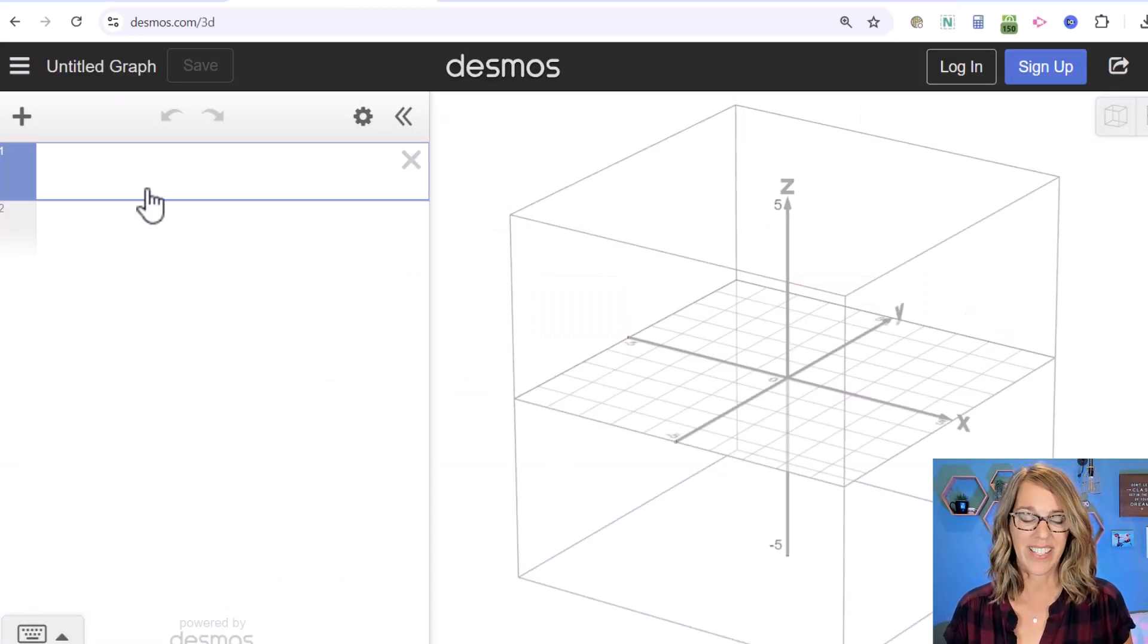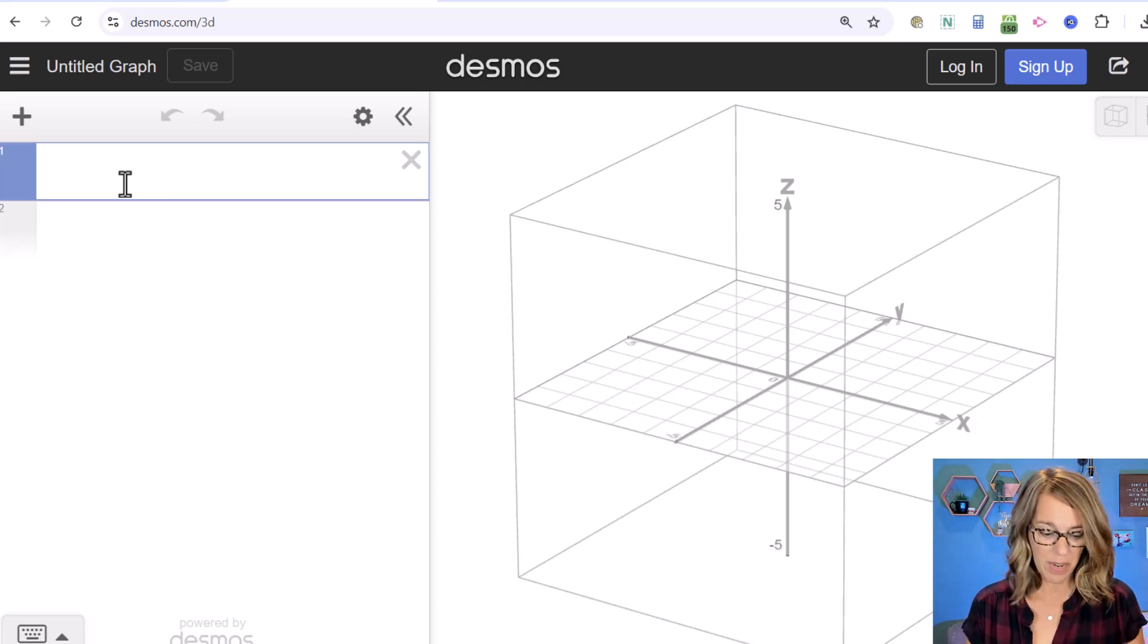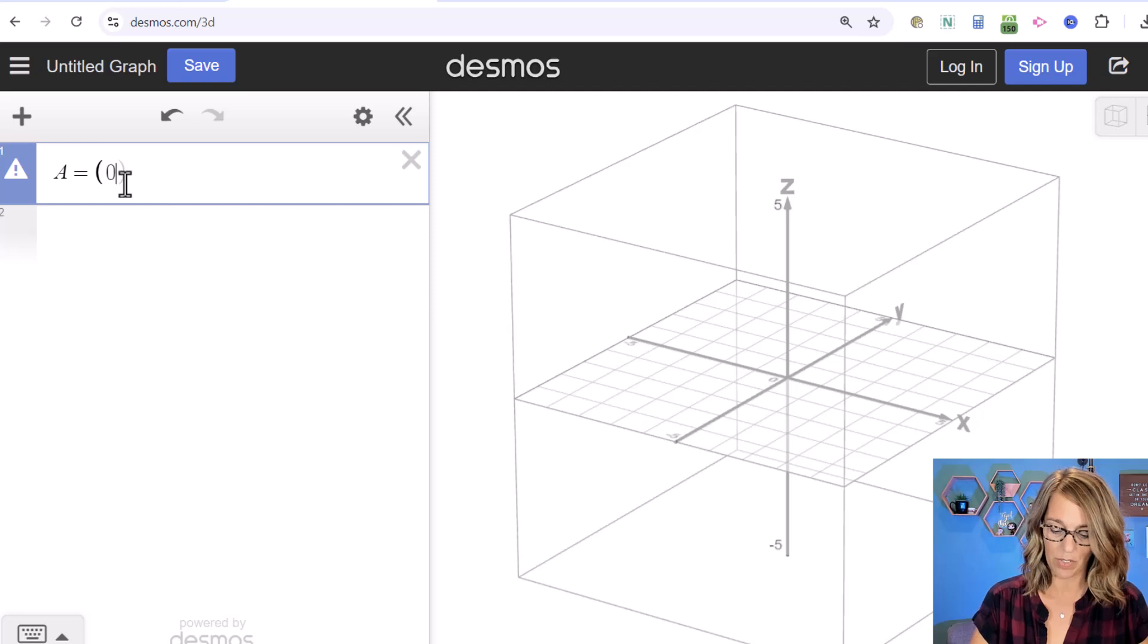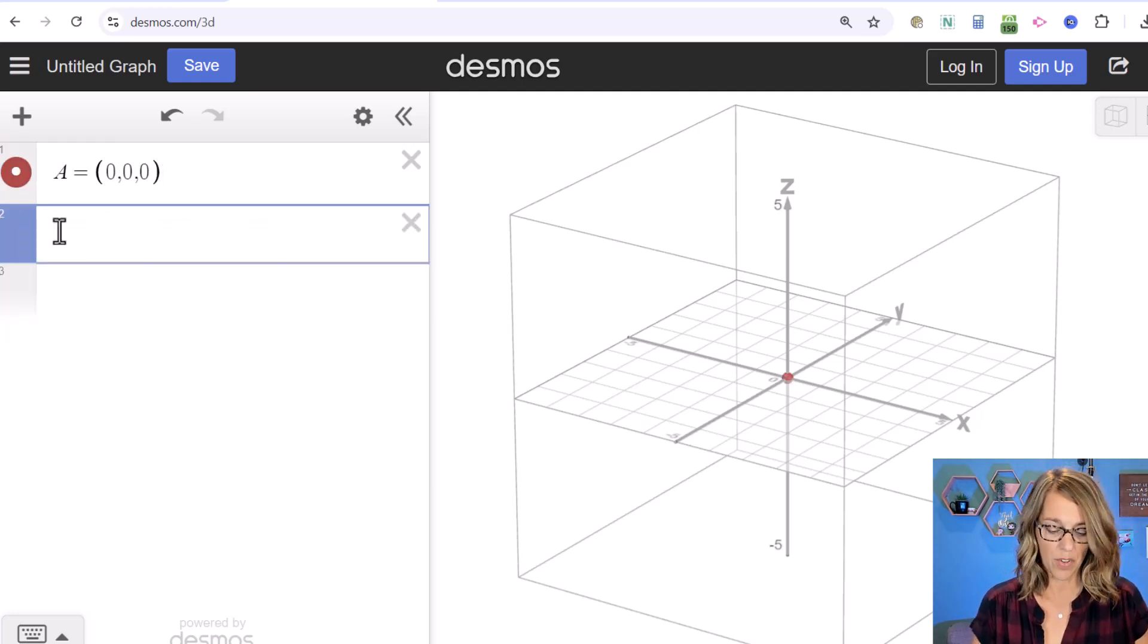I'm going to close this out and start by giving Desmos my initial points and terminal points. I want each vector to be in standard position, so I'll define the point (0,0,0) and a few more points.